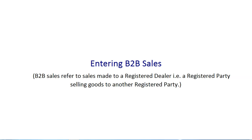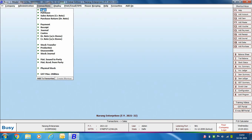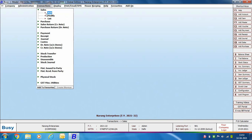First of all we will start with entering B2B sales. Basically, when a registered party sells goods to another registered party, this is termed as a B2B sale. To enter a B2B sale, first of all go to Transactions, Sales, Add option.